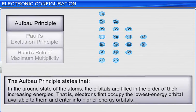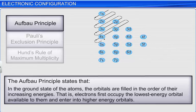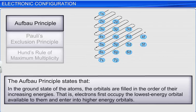First is the Aufbau principle. It states that in the ground state of the atoms, the orbitals are filled in order of their increasing energies. In other words, electrons first occupy the lowest energy orbital and then enter into successive higher energy orbitals. The electrons enter into various orbitals in an increasing order of n plus l value.